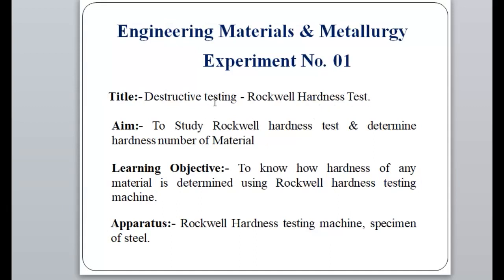Experiment number 1 is on Destructive Testing, specifically the Rockwell Hardness Test. The aim of the experiment is to study the Rockwell hardness test and determine the hardness number of a material. The learning objective is to learn how the hardness value of any material is determined using a Rockwell hardness testing machine.